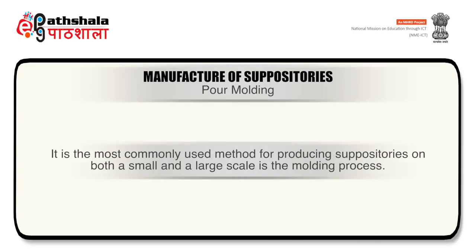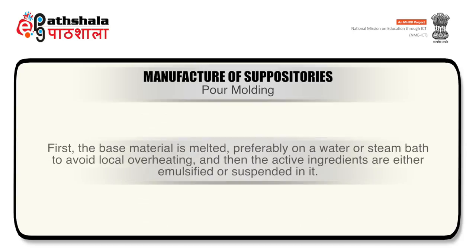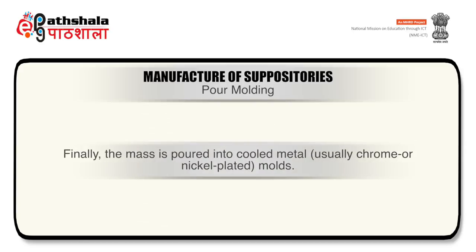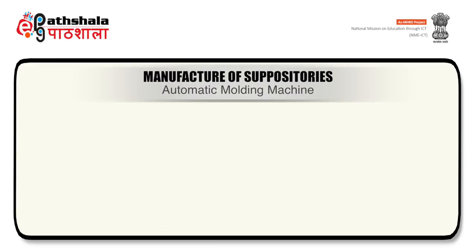The third method is pour moulding. It is the most commonly used method for producing suppositories on both a small and a large scale. First, the base material is melted, preferably on a water or steam bath to avoid local overheating. Then the active ingredients are either emulsified or suspended in it. Finally, the mass is poured into cooled metal moulds.